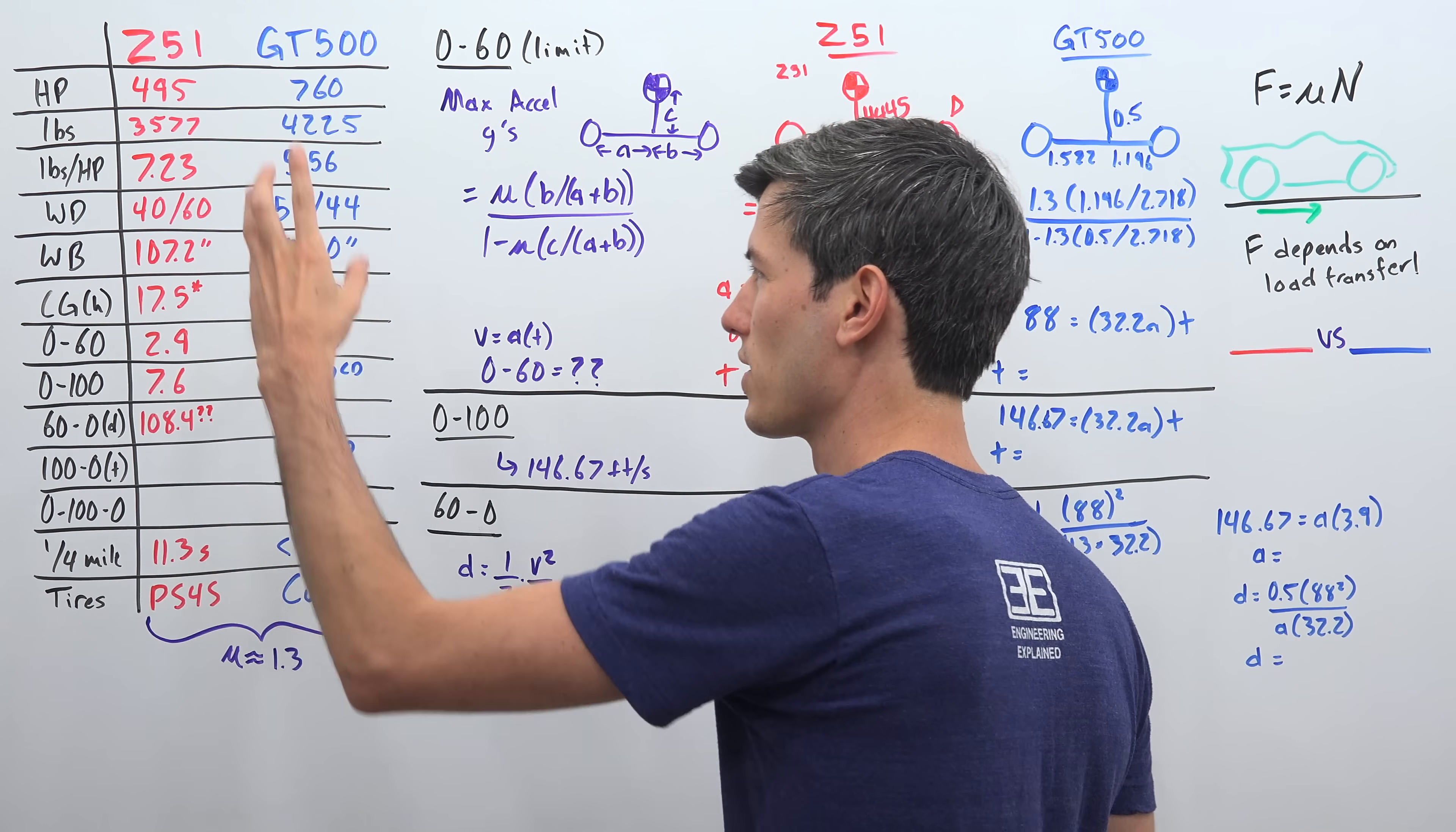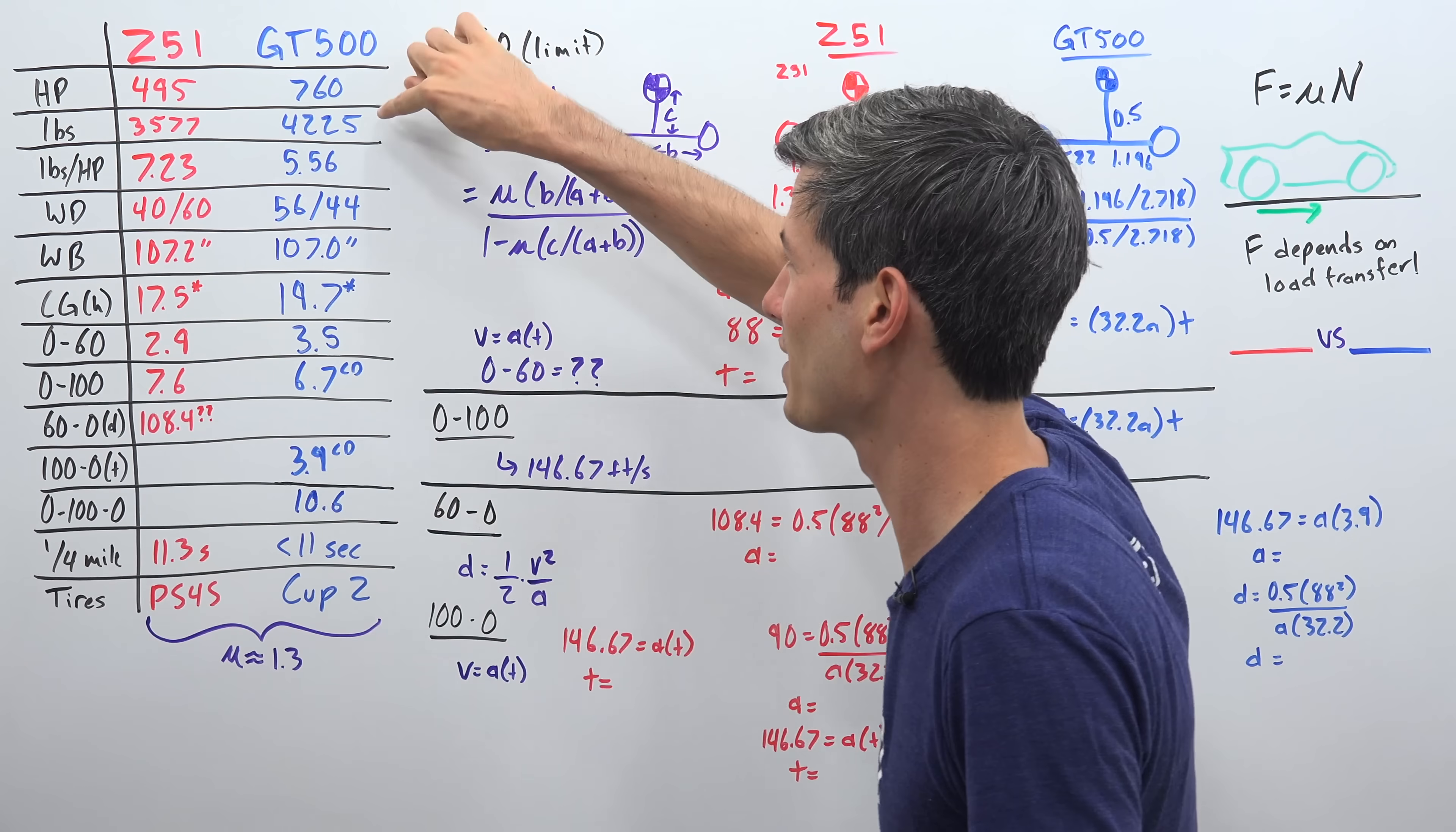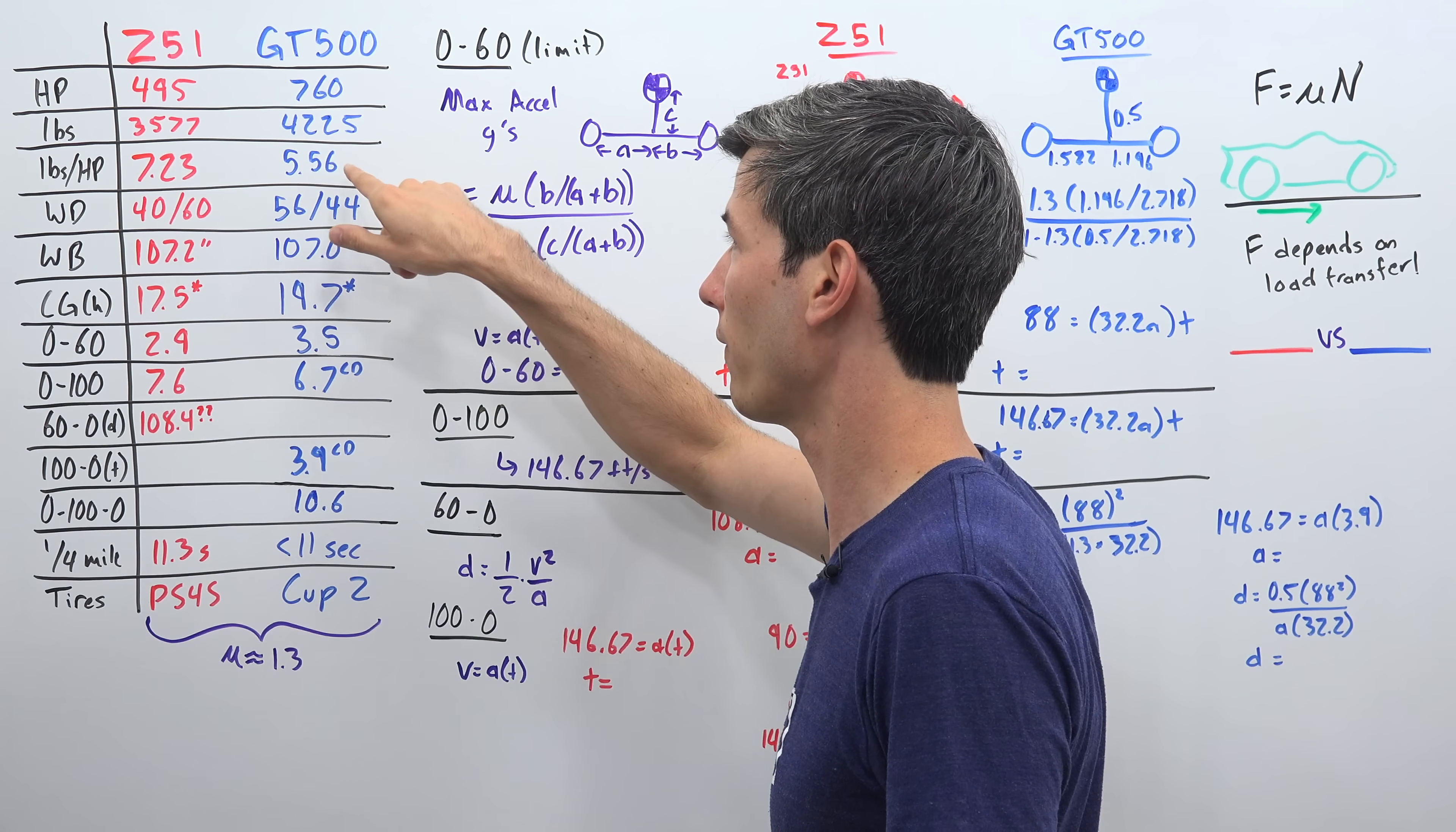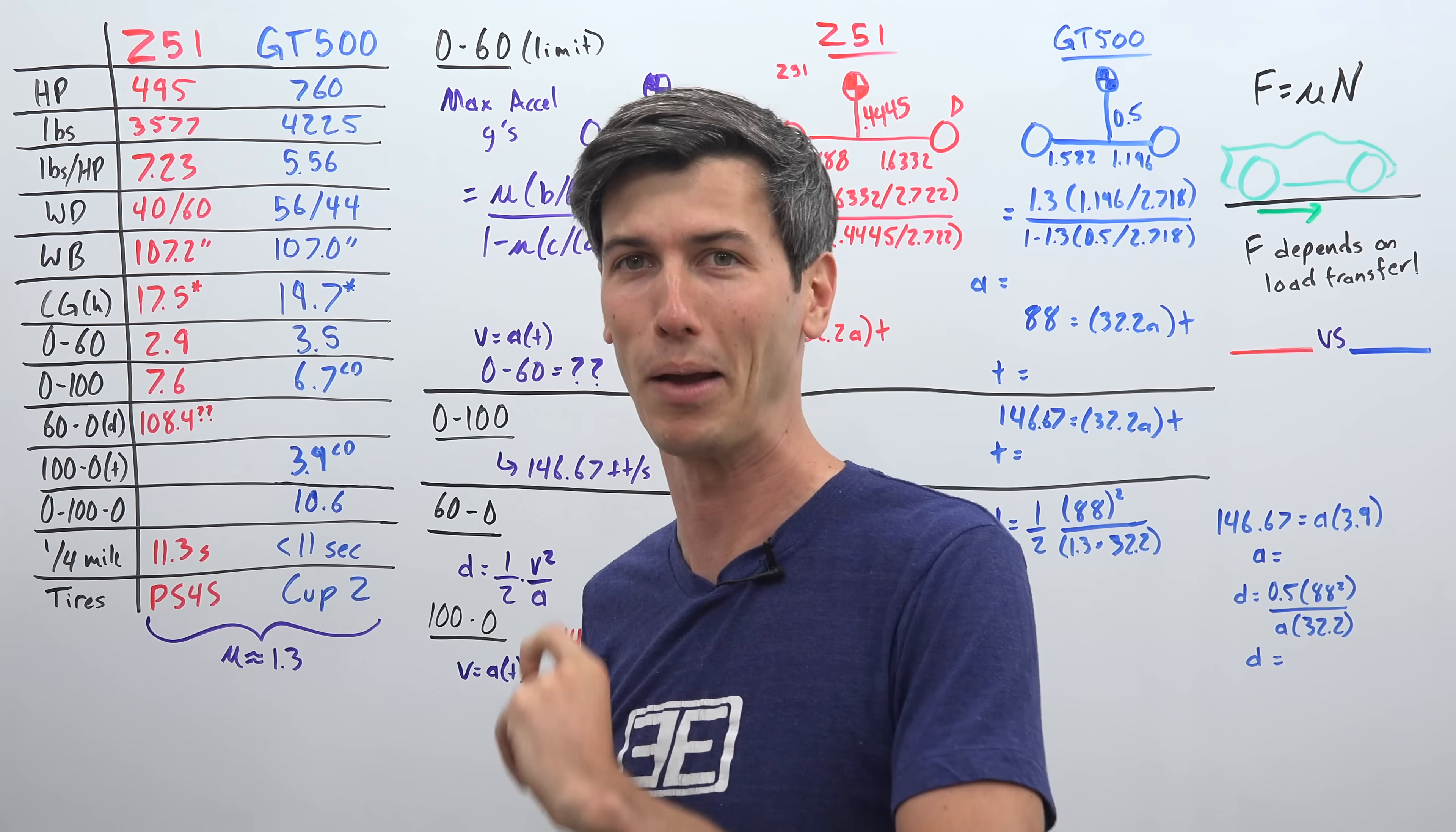So I've got all kinds of different numbers here, some of them we know, some of them we don't know. Looking at weight and looking at the GT500, 4,225 pounds versus 3,577 pounds. So is that why it's slower? No, that's not why it's slower. Even if this number is accurate right here, which we don't know for certain, but the GT500 is certainly going to be heavy. Even if this is accurate, it still has a much better power to weight ratio with just 5.56 pounds per horsepower versus 7.23 pounds per horsepower. Now I know some people are going to get upset because we're using freedom units in this video, but it's a video about two freedom cars. So we're using freedom units and then we'll get into a little bit of metric later because it's actually easier to do math with.